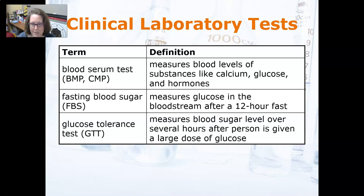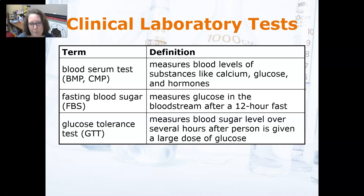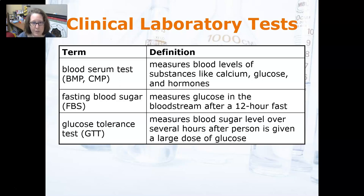If we're measuring substances like calcium, glucose, electrolytes, and kidney function, we usually do a BMP — a Basic Metabolic Panel — or a CMP, which is a Comprehensive Metabolic Panel. The CMP also looks at certain enzymes like AST, ALT, and alkaline phosphatase, so it has a few more tests.